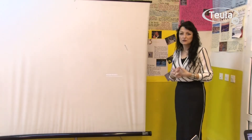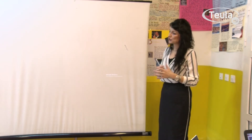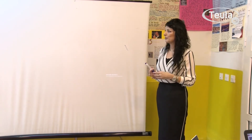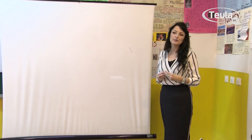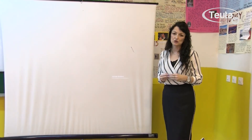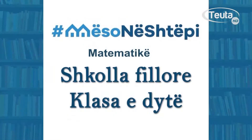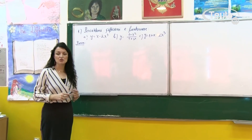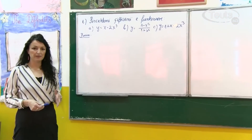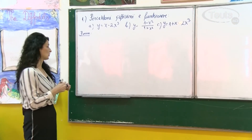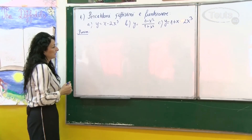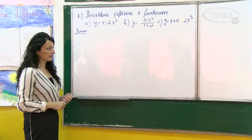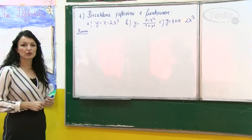Pra, këtu janë disa nga vetitë të cilat i karakterizojnë funksionet, dhe tani do të punojmë disa shembuj që kanë të bëjnë me qiftësinë e funksionit. Tani do të ushtrohemi me disa detyra që kanë të bëjnë me qiftësinë e funksionit, pra me vetitë e funksionit. Këtu kemi shembullin e parë dhe thotë: përcaktoni qiftësinë e funksioneve të dhëna.